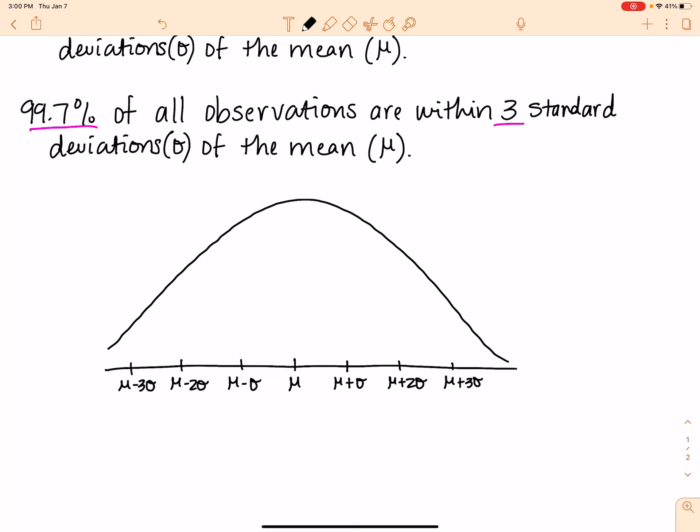And then, of course, we've got our percentages. So the rule looks like this. Within one standard deviation, we see 68 percent of our observations. Within two standard deviations, we can see 95 percent of our observations. And within three standard deviations, of course, we see 99.7 percent of our observations.